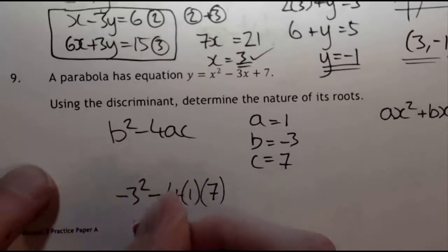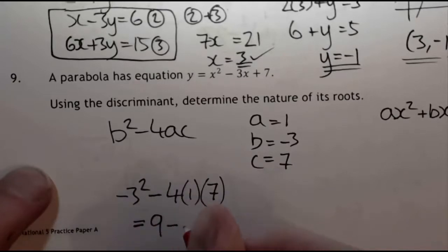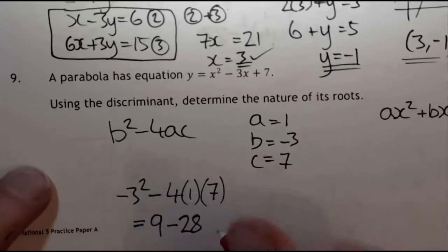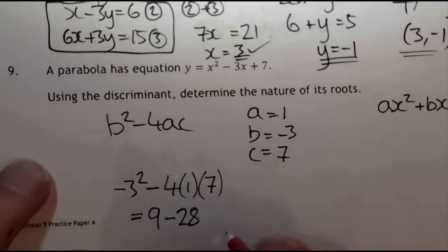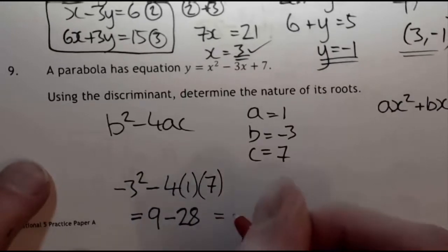So what we end up with is 9 minus 28, and 9 minus 28 is minus 19.